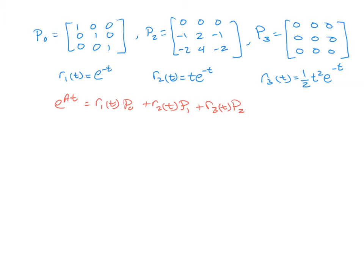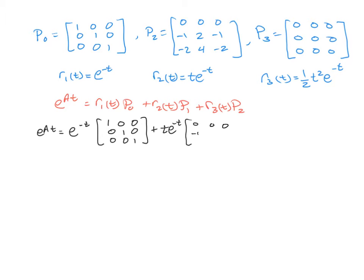So our E to the AT is going to have our E to the negative T times the identity matrix — 1, 0, 0, 0, 1, 0, 0, 0, 1 — plus a T E to the negative T times the matrix 0, 0, 0, negative 1, 2, negative 1, negative 2, 4, negative 2, and then a one-half T squared times the zero matrix.